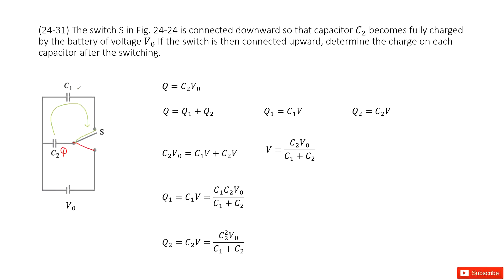Finally, the potential of C1, V1, equals V2. So the charge from C2 flows out and charges C1 until the potential of C1 equals the potential of C2. The final charge for C2 is C2 times V2. The capacitance times the final potential, which we can write as V.